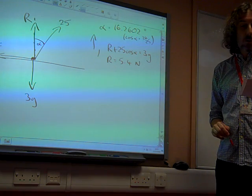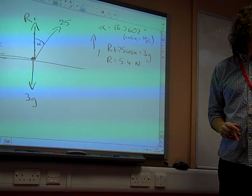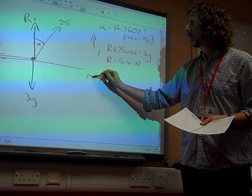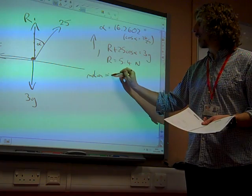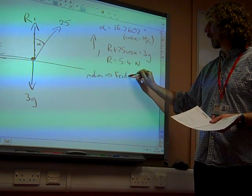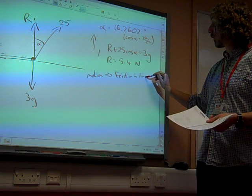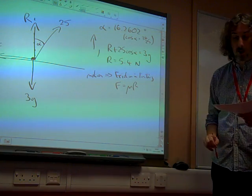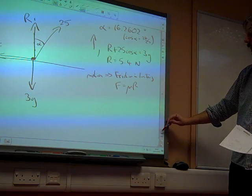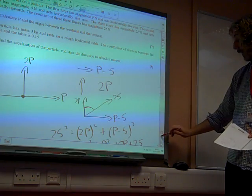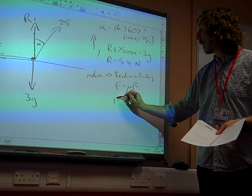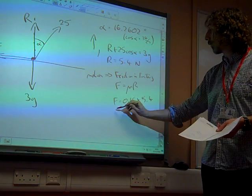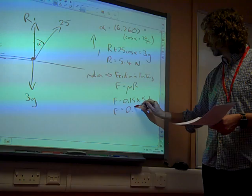We know that it's moving. Because it's moving, that tells us that friction is at its limiting value. So that means F equals mu R. We were told the coefficient of friction is 0.15. So F is 0.15 times 5.4, so the frictional force is 0.81 newtons.